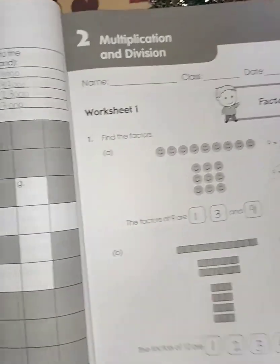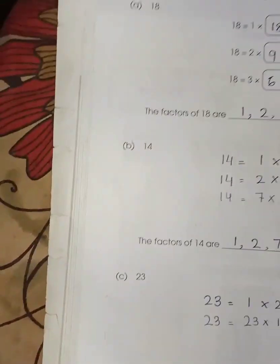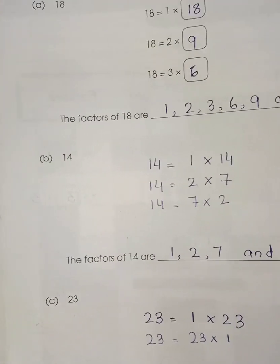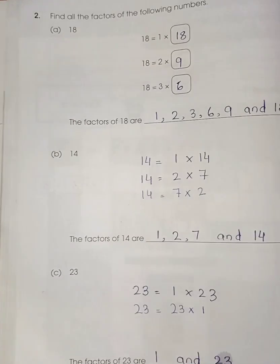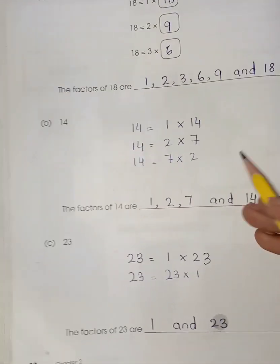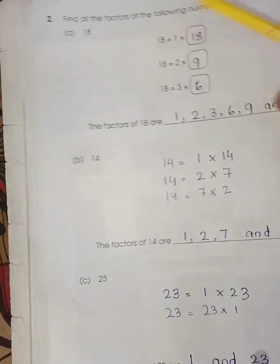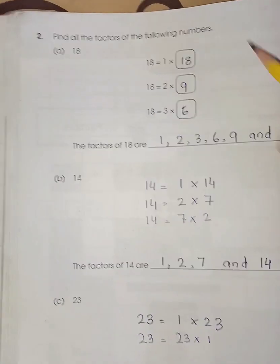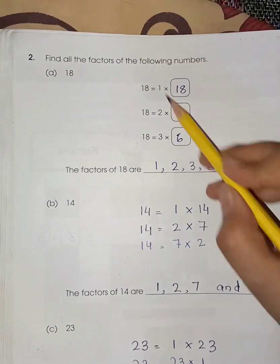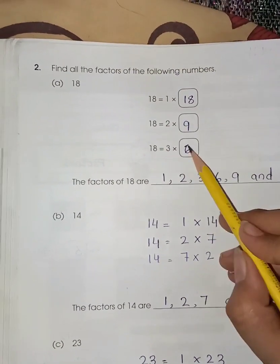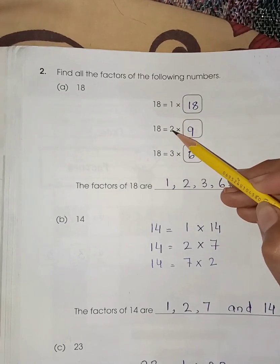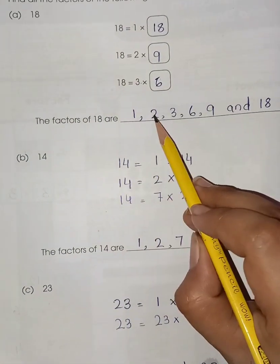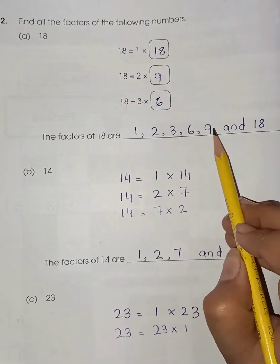Move on to the next page, page number 27 which is 28. Find all the factors of the following numbers. Here are the numbers. You have to find the factor. So 1 multiplied by 18 is 18, 2 nines are 18, 3 sixes are 18. So the factors are, start writing from the smallest number: 1, 2, 3, 6, 9 and 18.